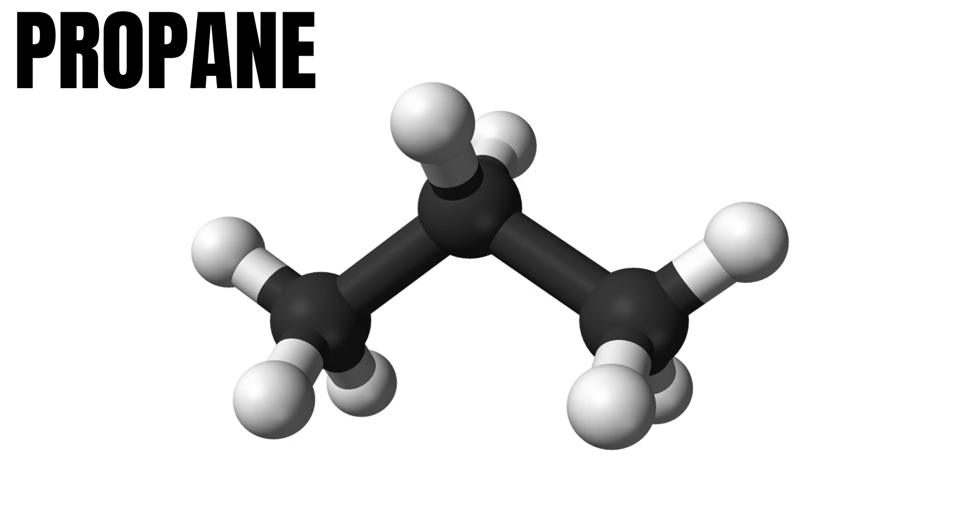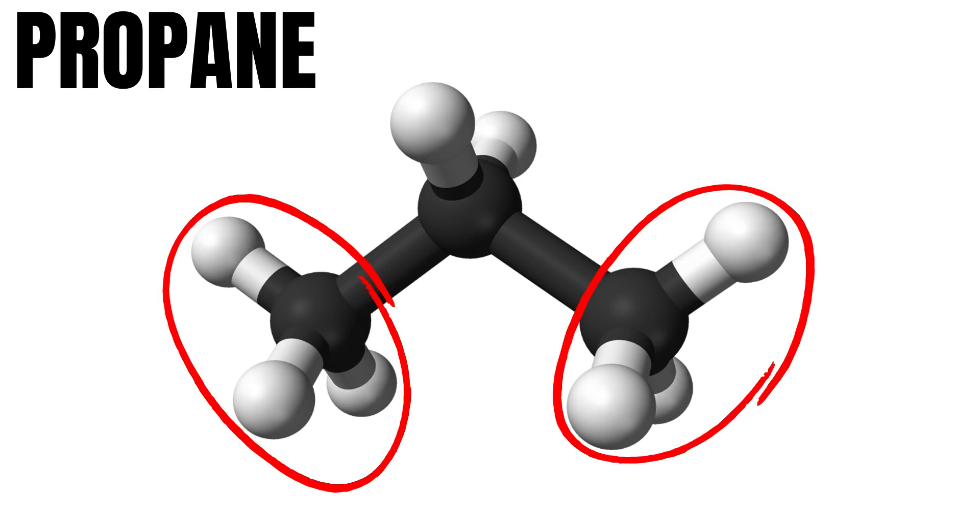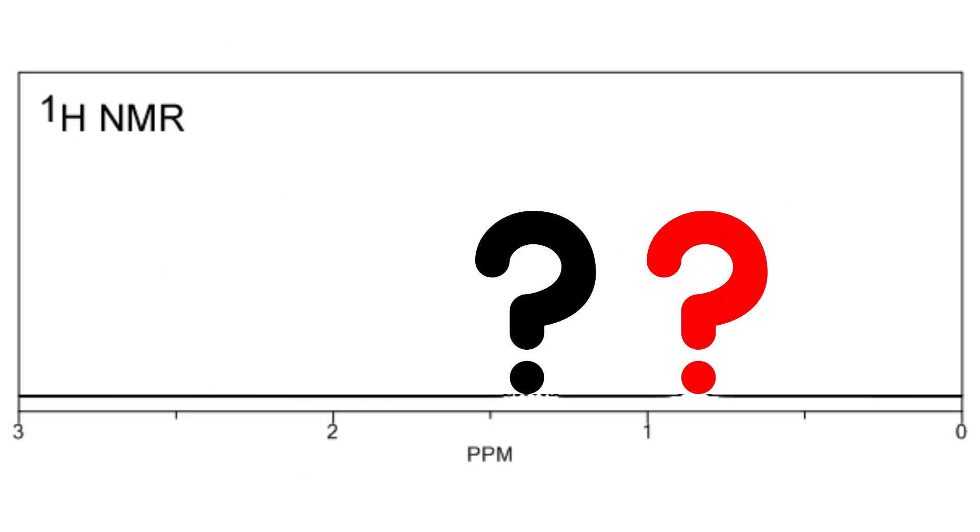First we'll consider what different kinds of chemical environment the hydrogens may find themselves in. The hydrogens on both sides share the same chemical environment and will therefore show up at the same spot on the x-axis. This peak will also be the least chemically shifted since the hydrogens are next to only one carbon atom.